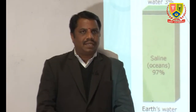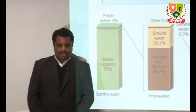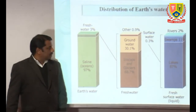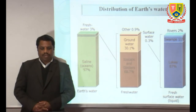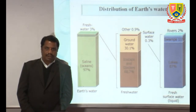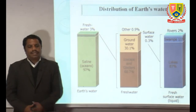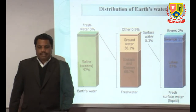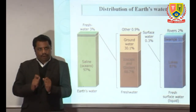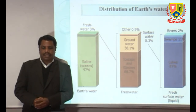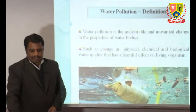First, let us look at the availability of water in the world. Of 100% of water, 97% is saline water, and only 3% is fresh water. Of this 3%, about 68.7% is in ice caps, and 30.1% is groundwater. Surface water accounts for only 0.3%, of which lakes hold 87%, rivers 2%, and other sources 11%.